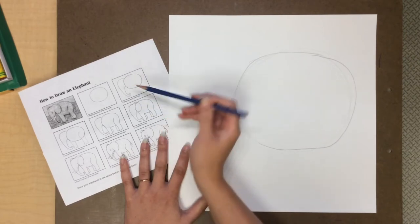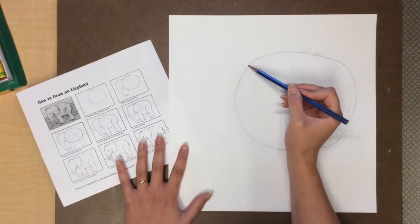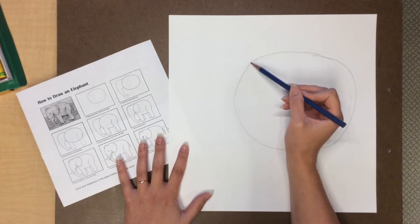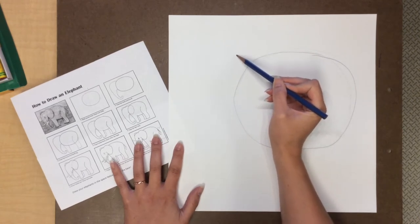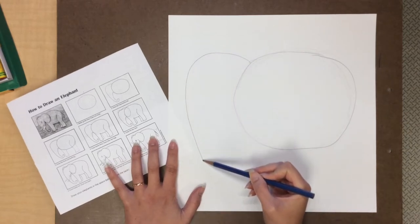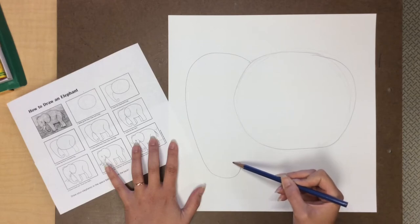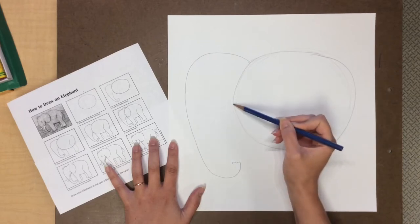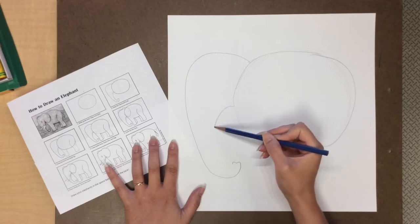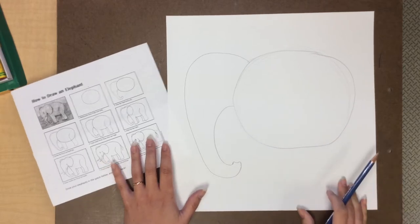Now the next step is I'm gonna draw the head. The head is made up of some curved lines. So I'm gonna start with the line connected to the body and then it's gonna come down and curve around for the elephant's trunk. Then the other side curves down to meet that other line.